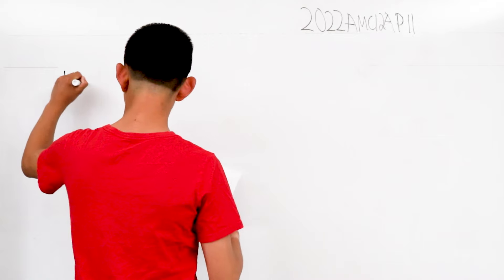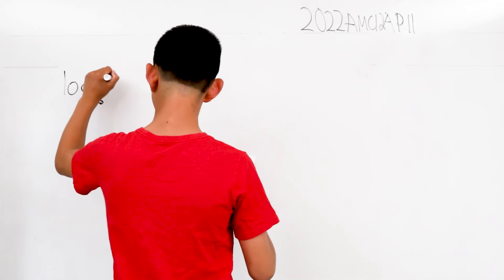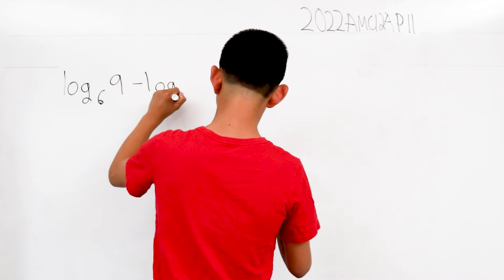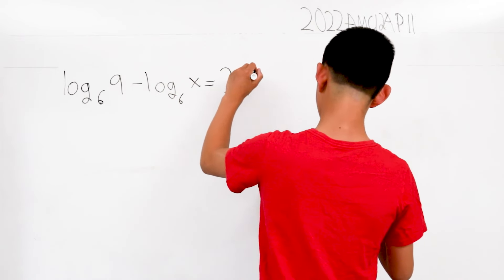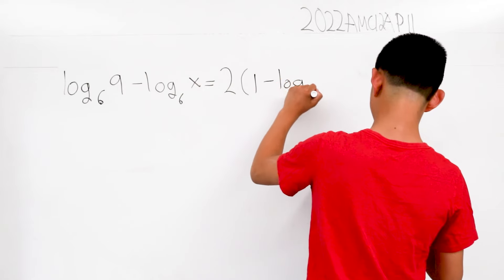This means that log base 6 of 9 minus log base 6 of x is equal to 2 times the distance between 1 minus log base 6 of 10.